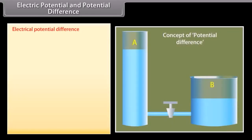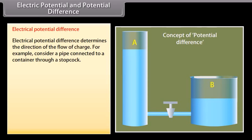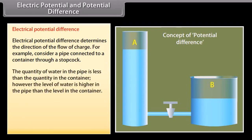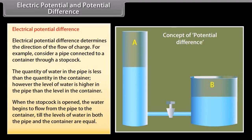Electrical potential difference determines the direction of the flow of charge. For example, consider a pipe connected to a container through a stop cock. The quantity of water in the pipe is less than the quantity in the container; however, the level of water is higher in the pipe. When the stop cock is opened, water flows from the pipe to the container until the levels are equal. It is the potential difference that is responsible for the direction of flow.